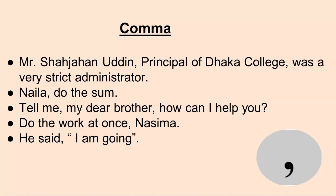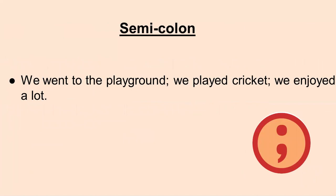Now come to the semicolon. Look at this example: 'We went to the playground; we played cricket; we enjoyed a lot.' After each clause there is a semicolon. This is one complete thought expressed in three clauses. There are no coordinating conjunctions used, but we could say 'We went to the playground and we played cricket and we enjoyed a lot.' Instead of conjunctions, semicolons have been used here.